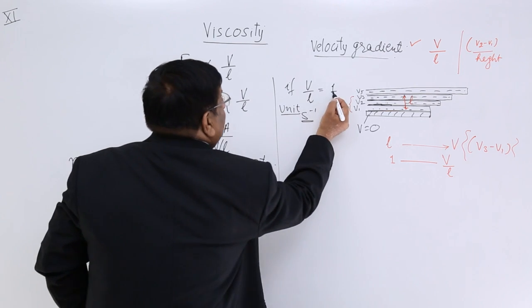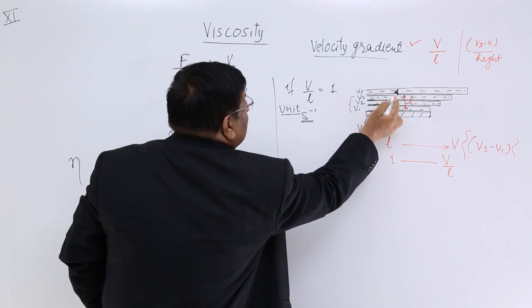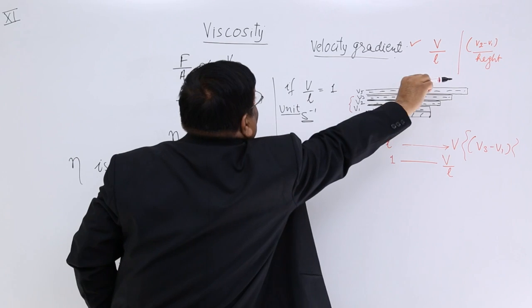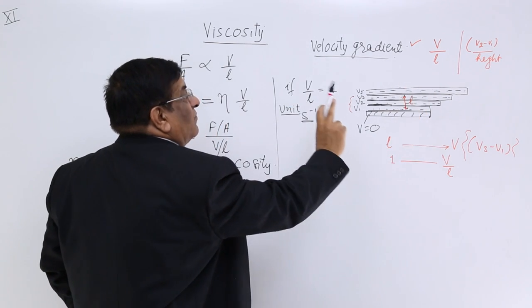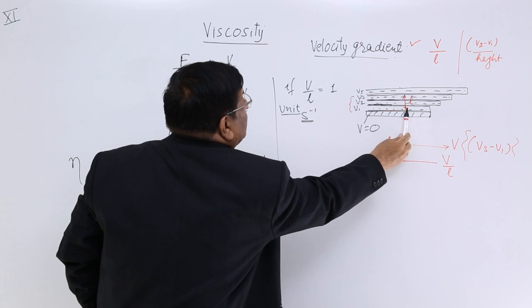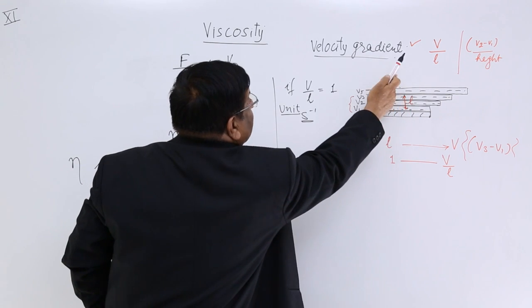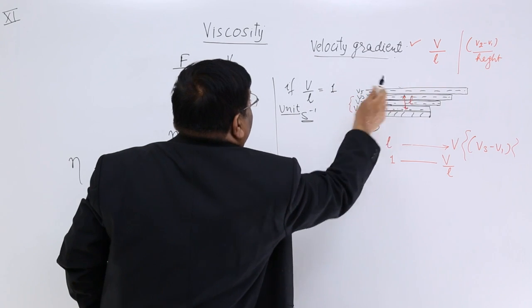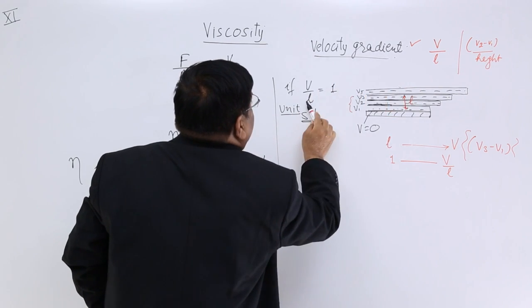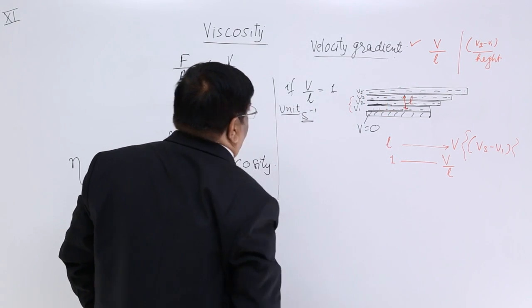Again, this 1 means what? Go to the height of 1 meter and the velocity has increased by 1 meter per second. That is velocity gradient of 1. Again, go to the height of 1 meter. There is a difference in velocity. How much is the difference? 1 meter per second is the difference. Then we will say velocity gradient is equal to 1.